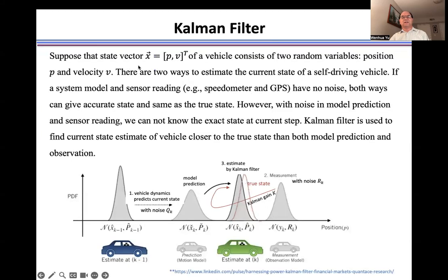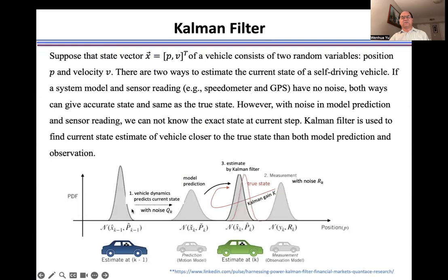Suppose the state vector of a self-driving vehicle includes two random variables: one is the position p, one is the velocity v. We can use the system model to predict the current state of a self-driving vehicle from its previous state, or directly read the state from the sensor model of the vehicle.